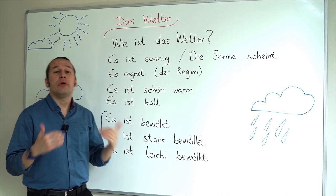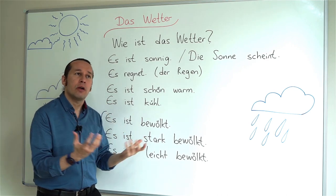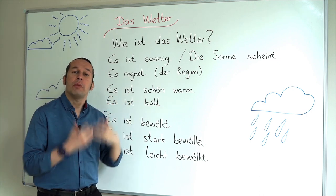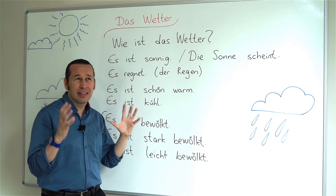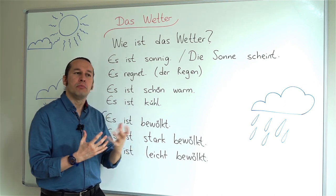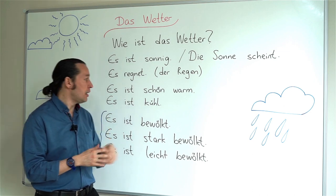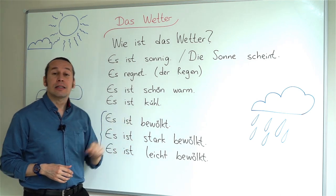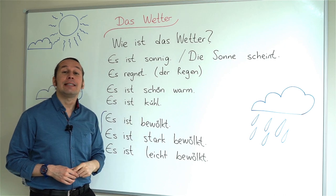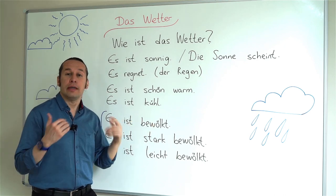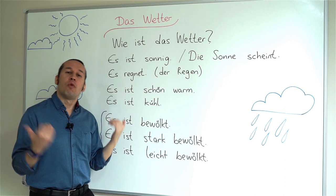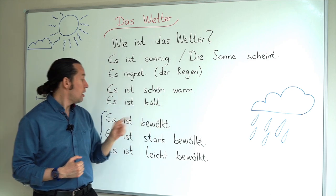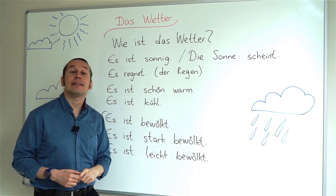When I say it is beautifully warm — really good weather — I'll say 'Es ist schön warm.' It is comfortably warm, not that hot, but a good temperature. If it's cool, I will then say 'Es ist kühl.' So: beautifully warm is 'Es ist schön warm,' and cool is 'Es ist kühl.'